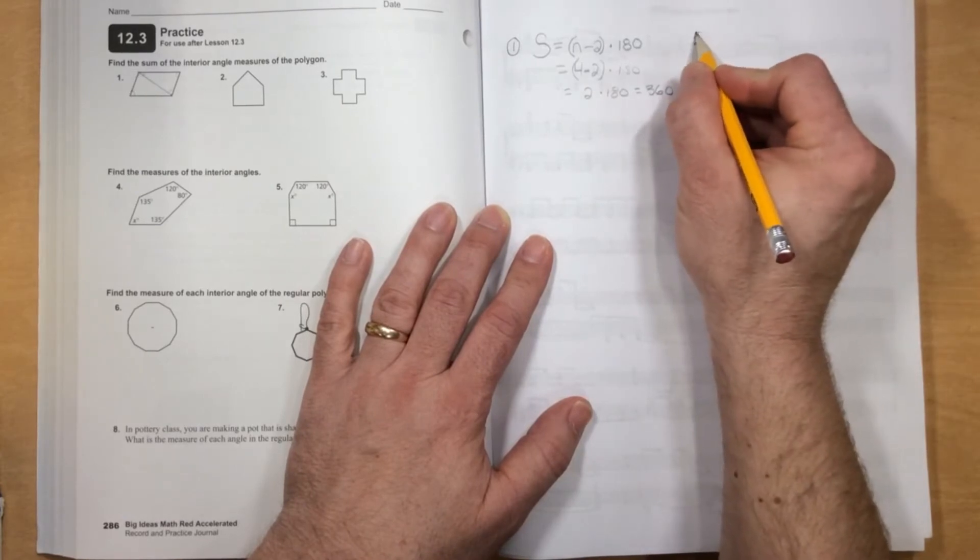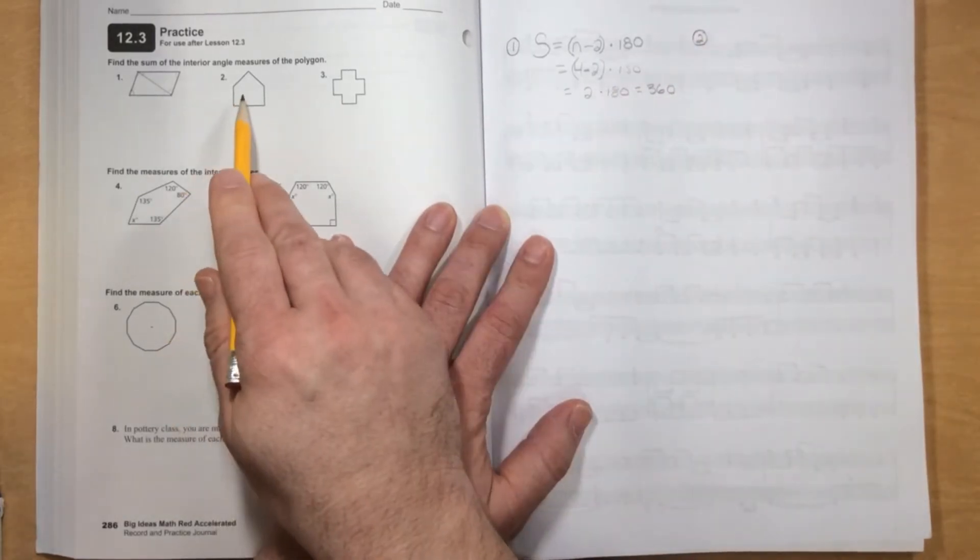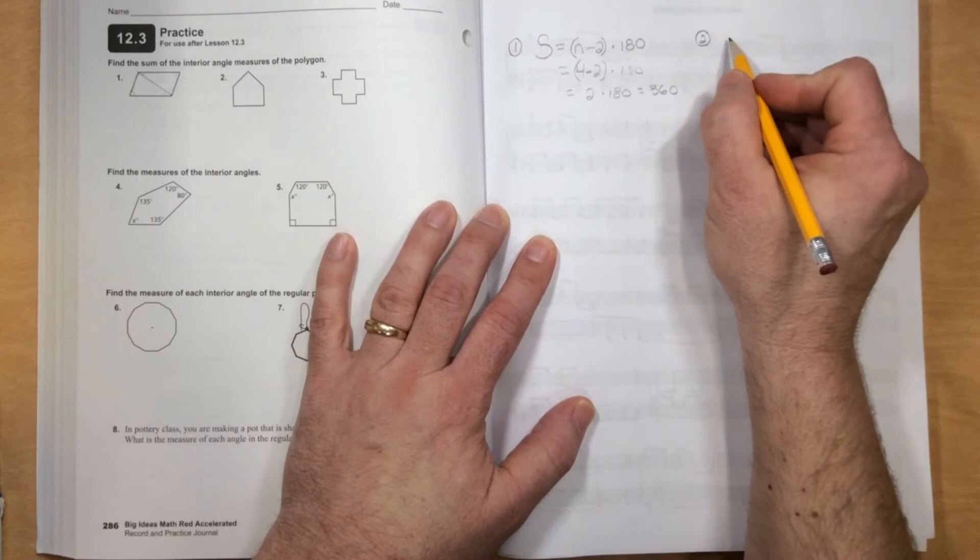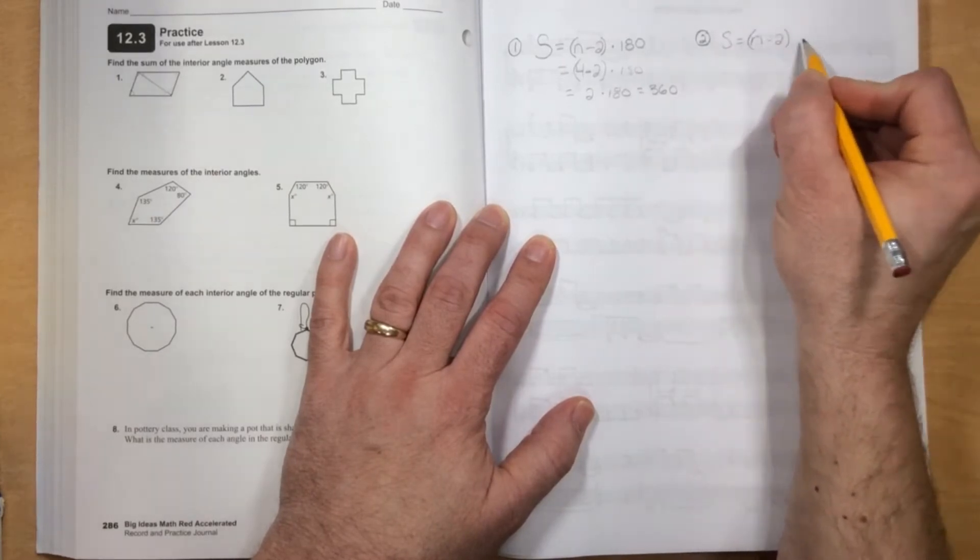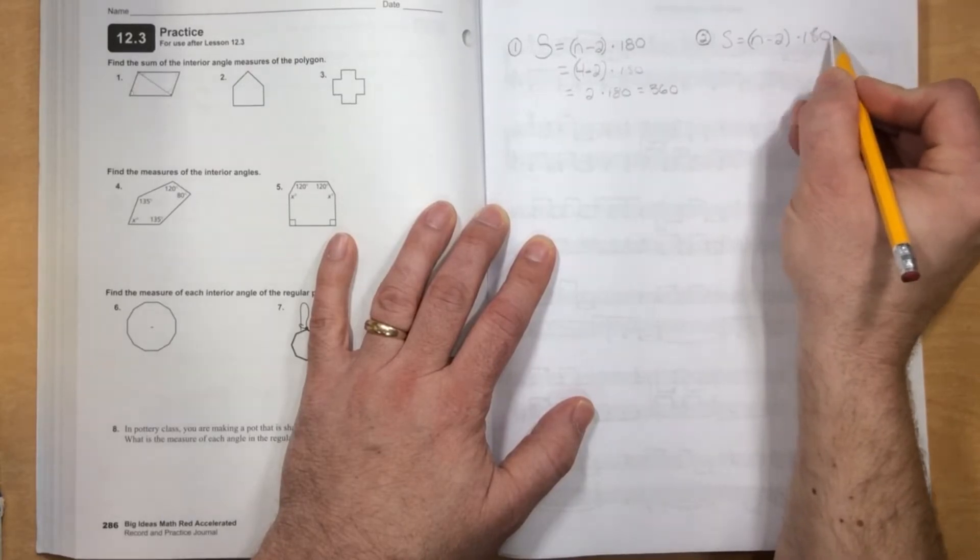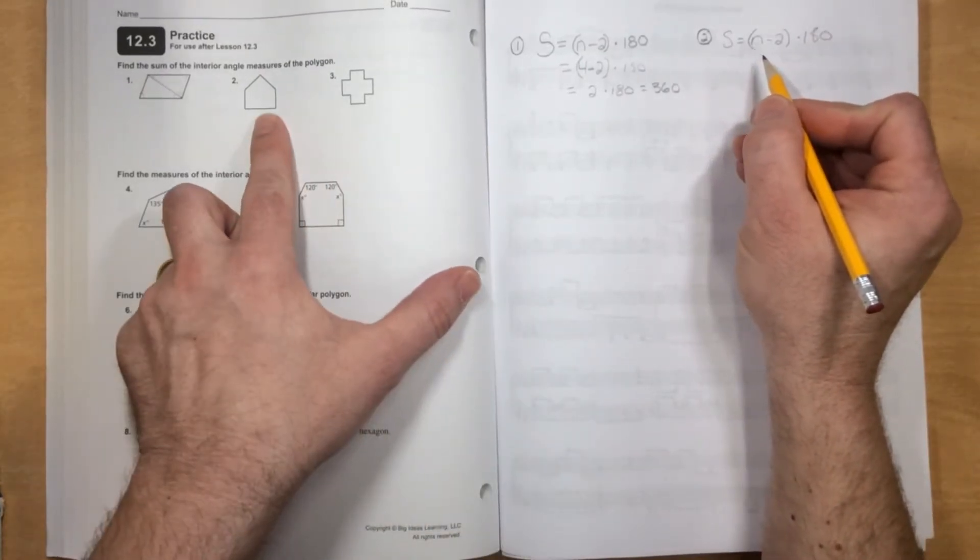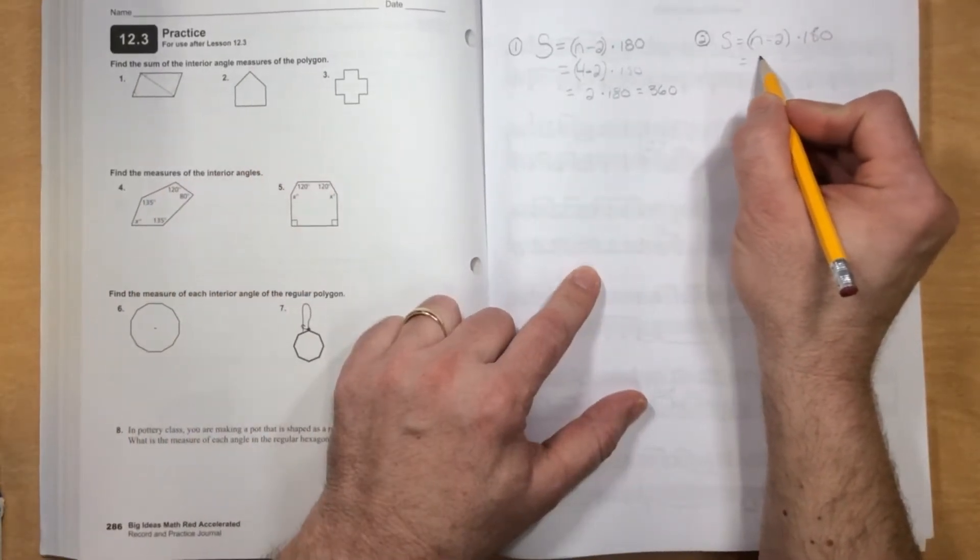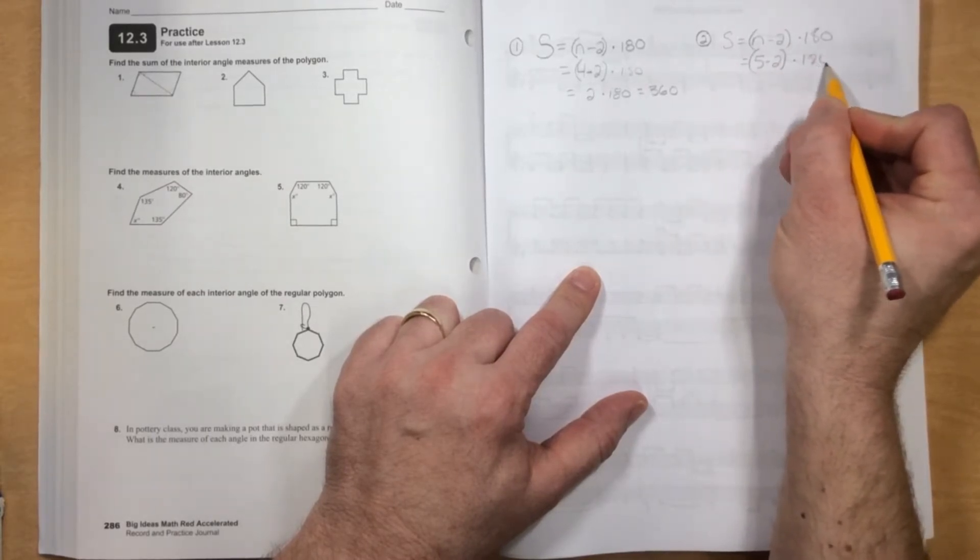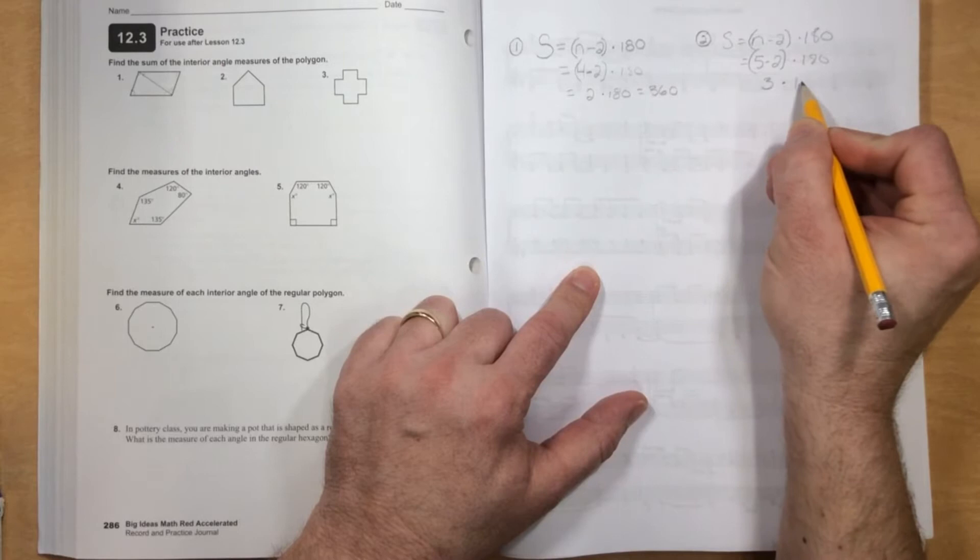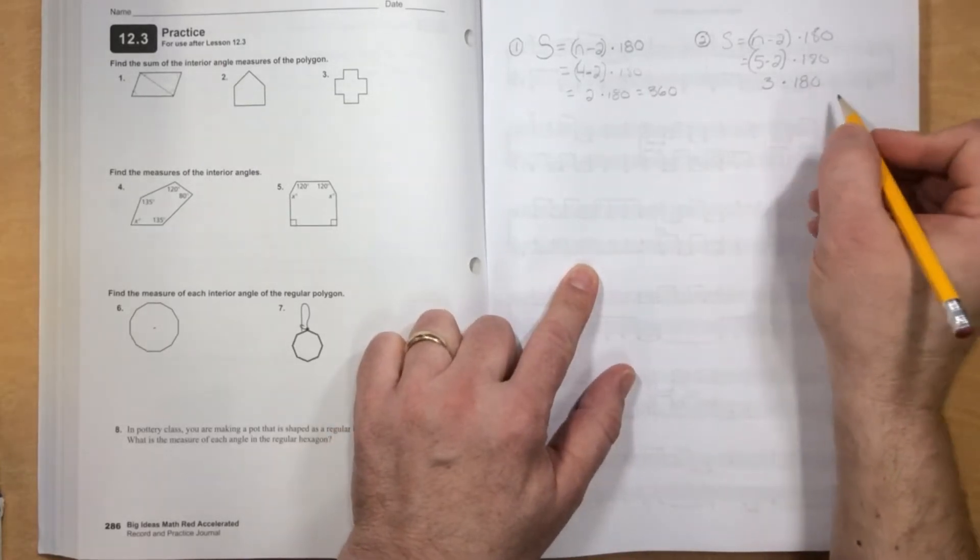Number 2. Well, we can just use the formula. S equals N minus 2 times 180. The number of sides here, it's a pentagon, so 5 sides. So 5 minus 2 times 180, which is 3 times 180, which is 540.